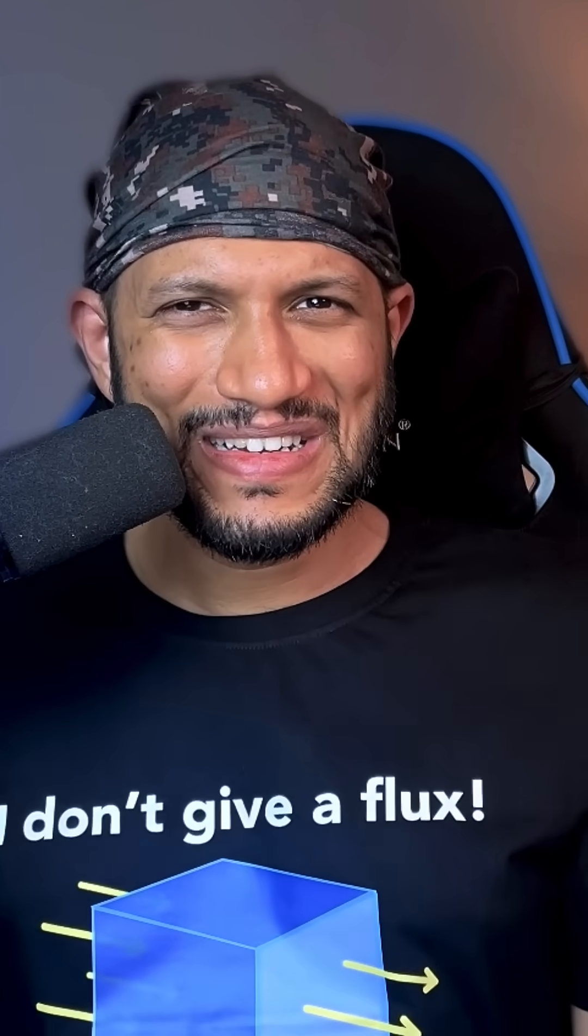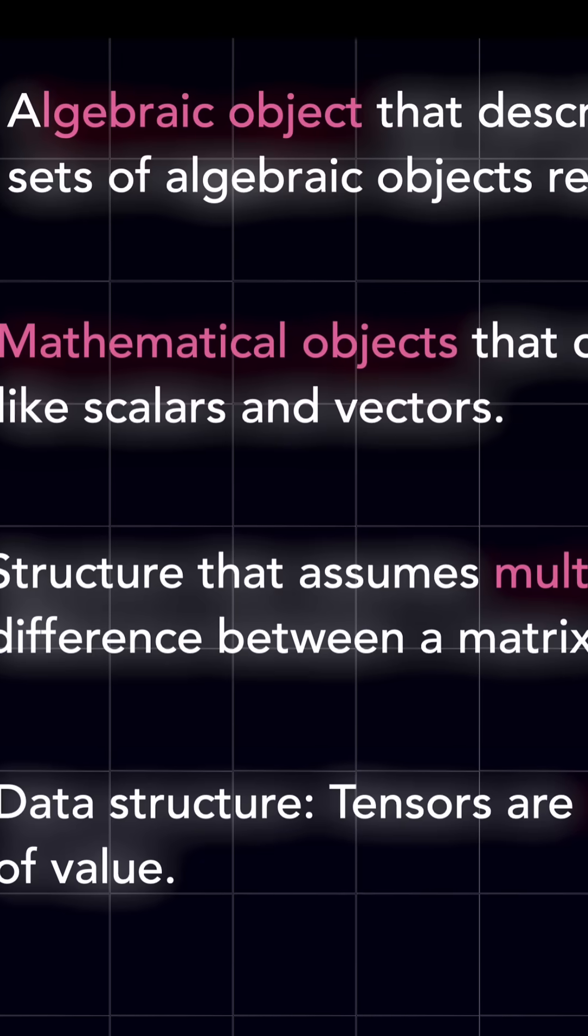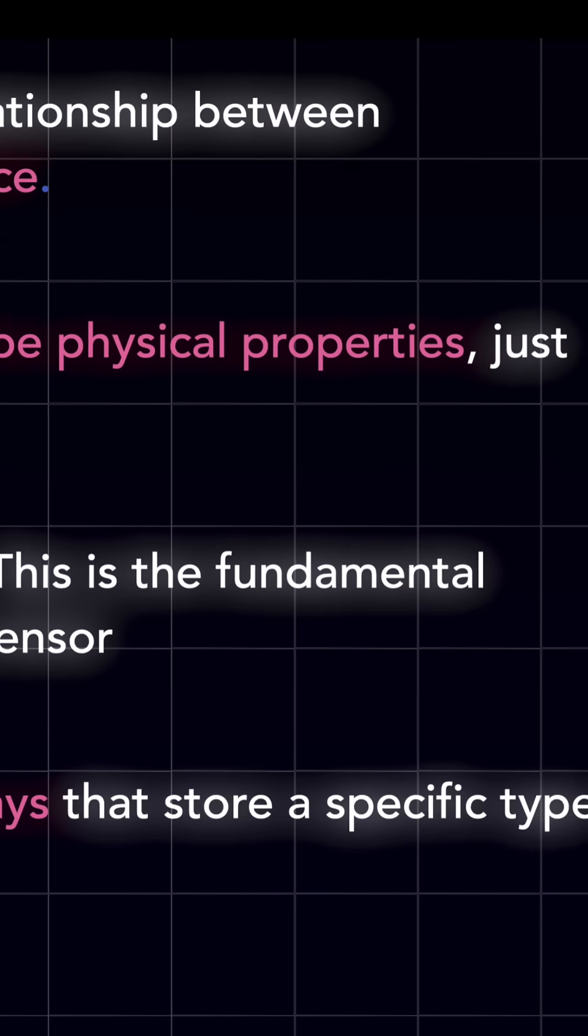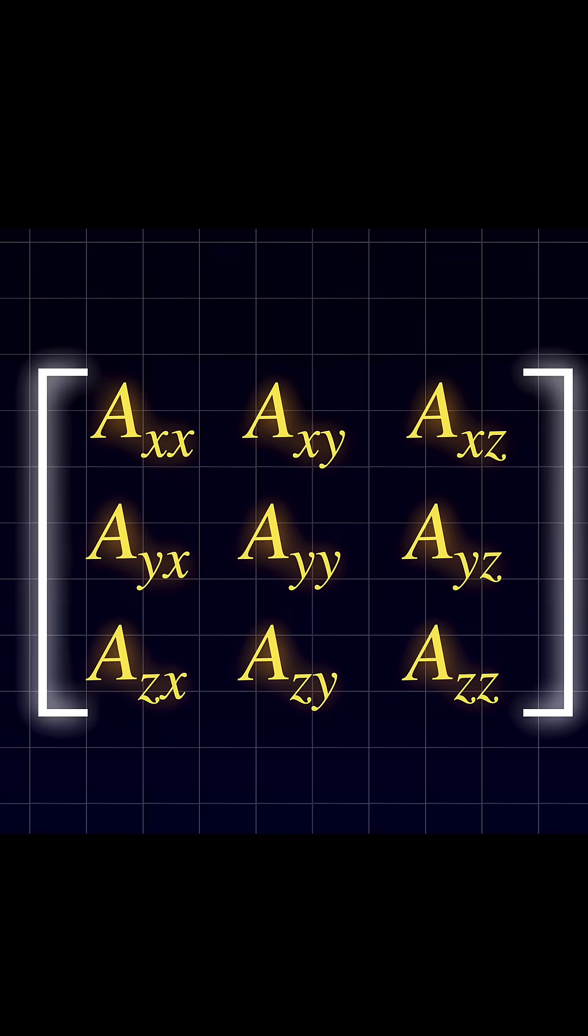What the heck is a tensor? Most definitions I read were pretty vague. And then I learned that it is kind of like a matrix, but it's better to think in terms of indices.